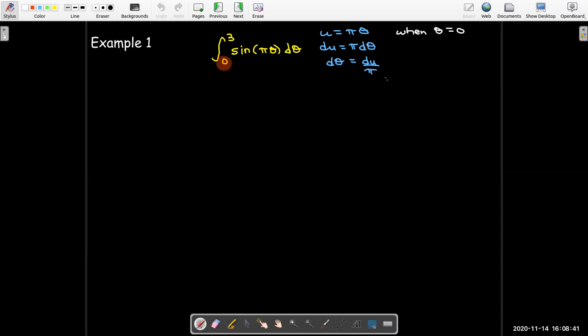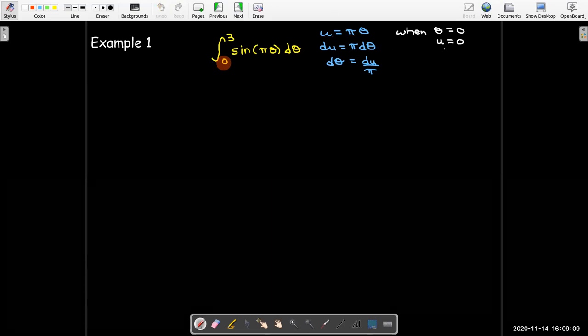Now let me change the bounds. First the lower bound. So when theta equals 0, remember these bounds are written in terms of theta. This is theta equals 0 and theta equals 3. So I want to change those to be in terms of u. I'll use the formula u equals pi times theta. So pi times 0 will give me 0. So now u equals 0.